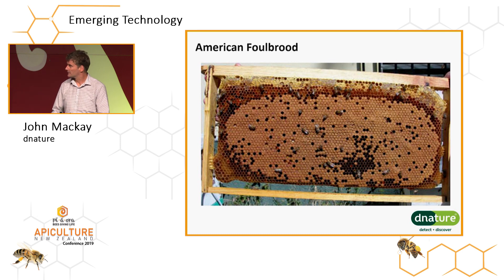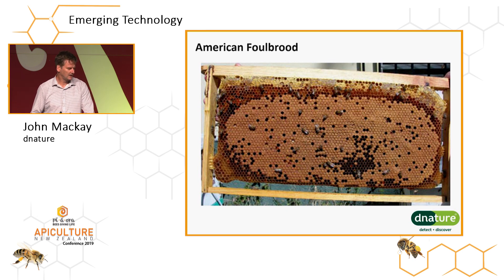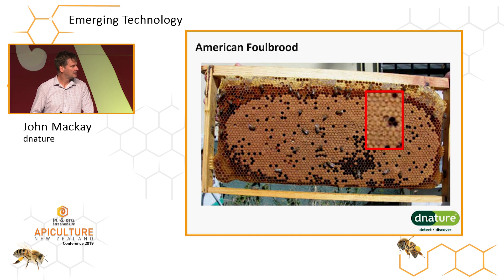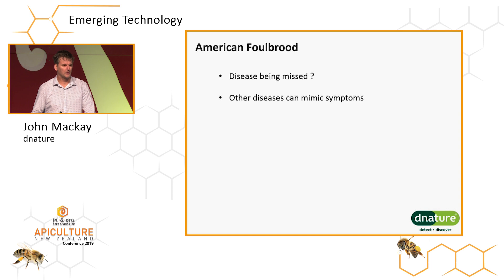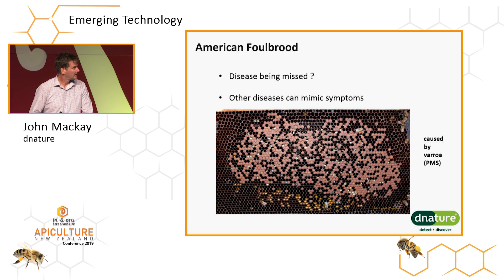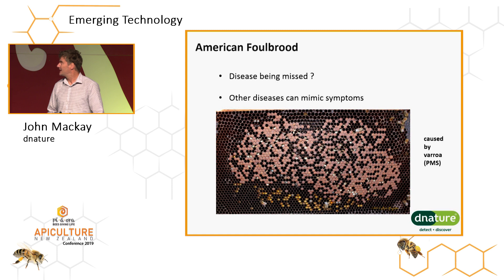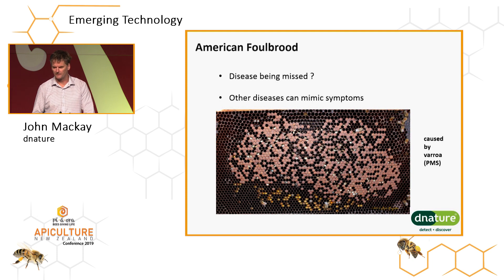With American foulbrood, when we have frames of clear brood, suspect cells can be readily identified and potentially roped out. But the issue is we know disease is being missed and other diseases can mimic symptoms. So when we get really patchy frames where PMS is causing issues but you start getting matchsticks and going through multiple cells looking for American foulbrood, it becomes very laborious.